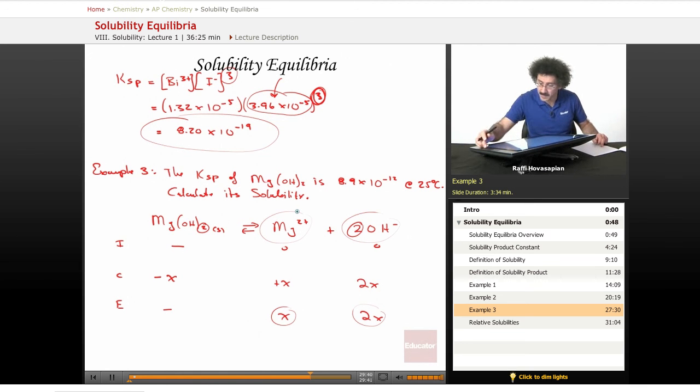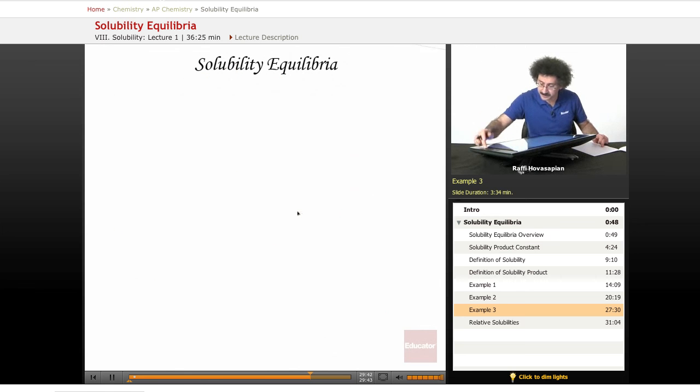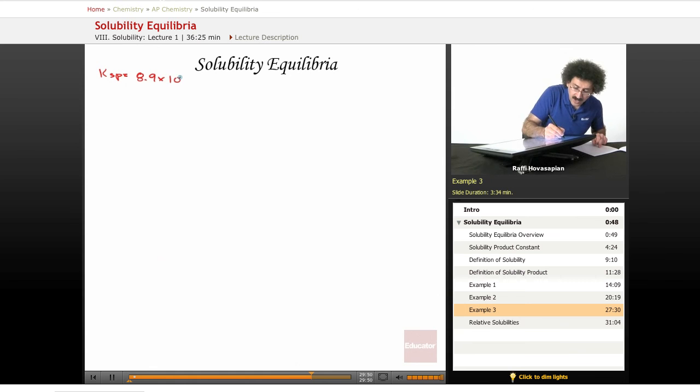Ksp is equal to 8.9 times 10 to the negative 12. That's equal to the magnesium ion concentration times the hydroxide ion concentration squared. It's equal to x times 2x squared. Be very careful how you do this.